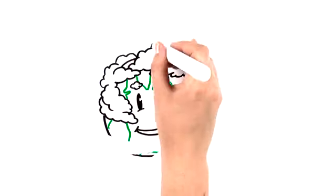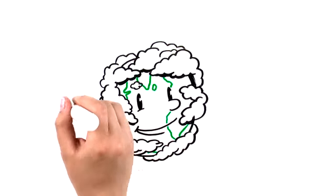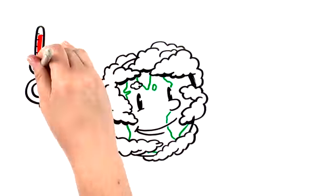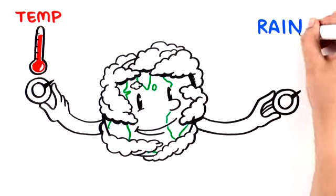Clouds cover around 70% of the planet at any given time, so they play a big role in determining how warm and how much water Earth gets.